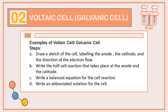Here are the steps on how to draw or sketch or represent a Voltaic Cell or Galvanic Cell. First, we need to draw a sketch of the cell, labeling the anode, the cathode, and the direction of electron flow, then write the half-cell reaction that takes place at the anode and the cathode. Always remember that a Voltaic Cell or Galvanic Cell has a redox reaction going on in it. Then we need to write a balanced equation of the cell reaction and write an abbreviated notation for the cell.